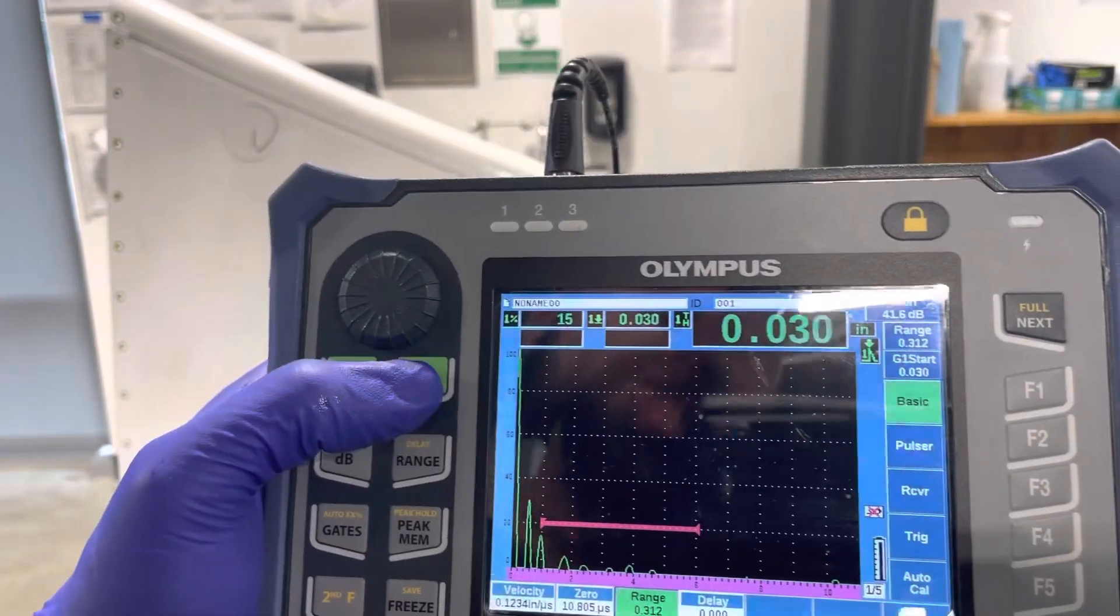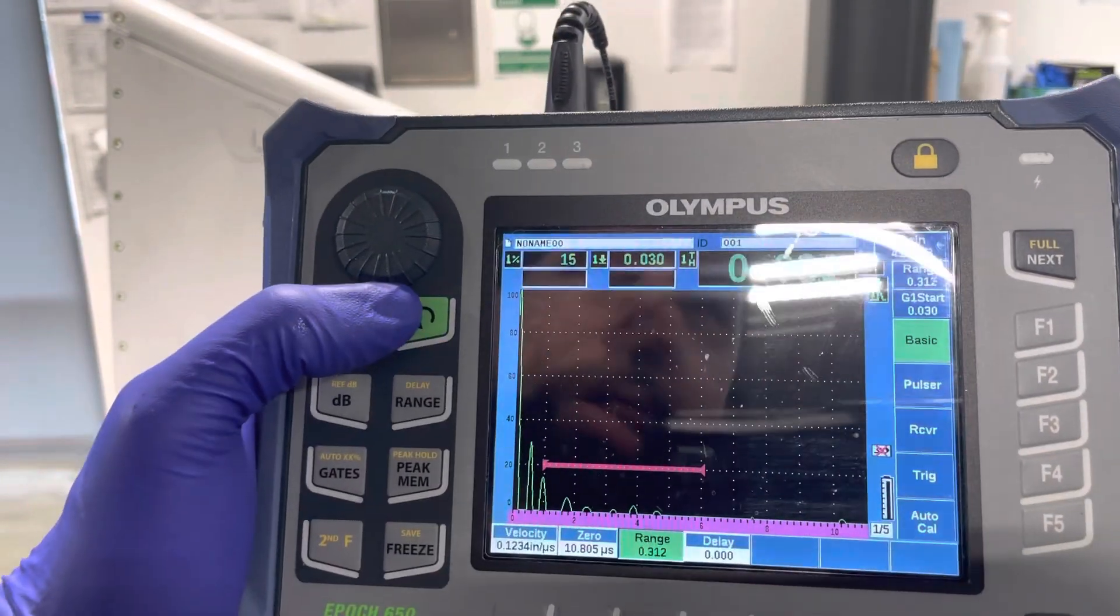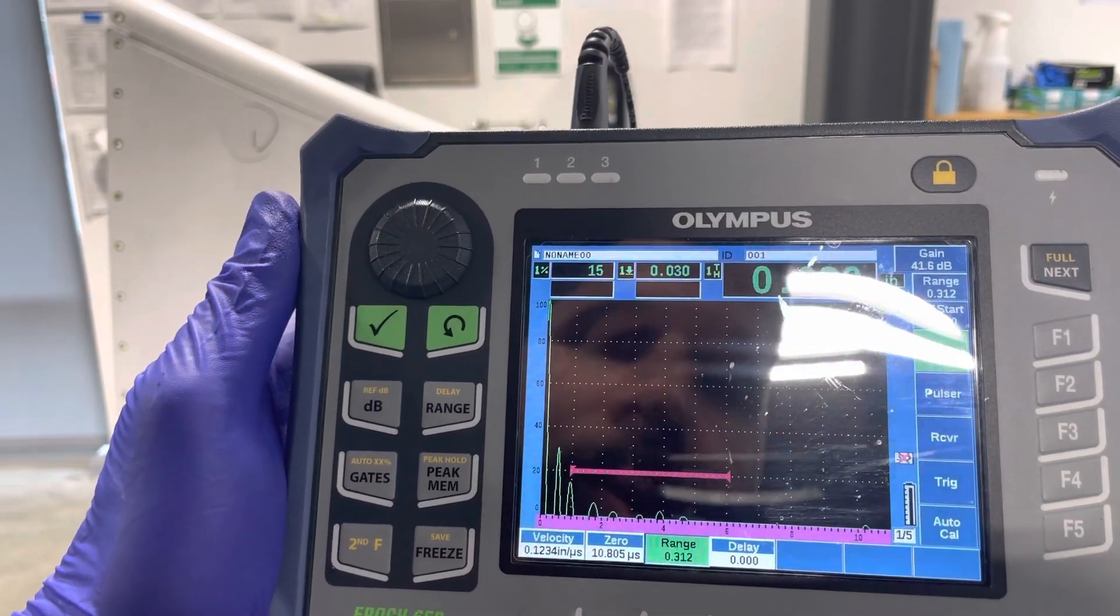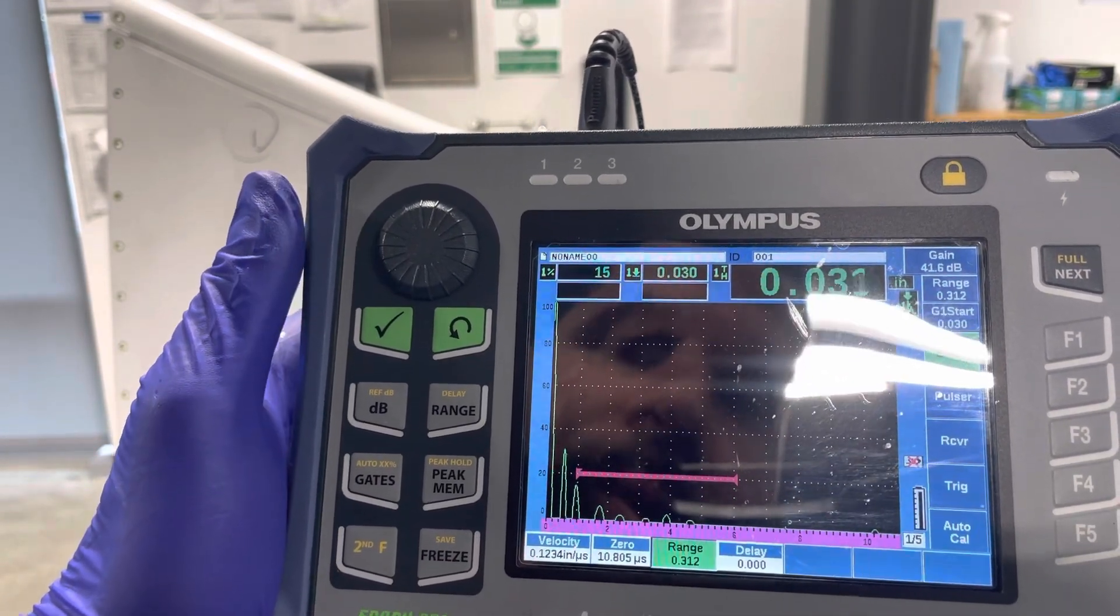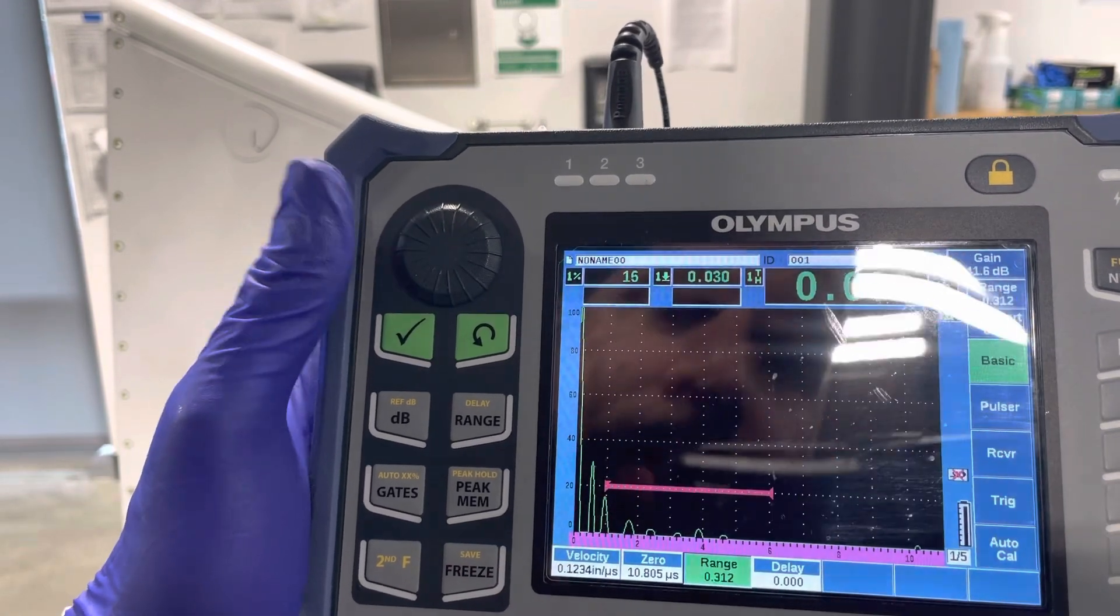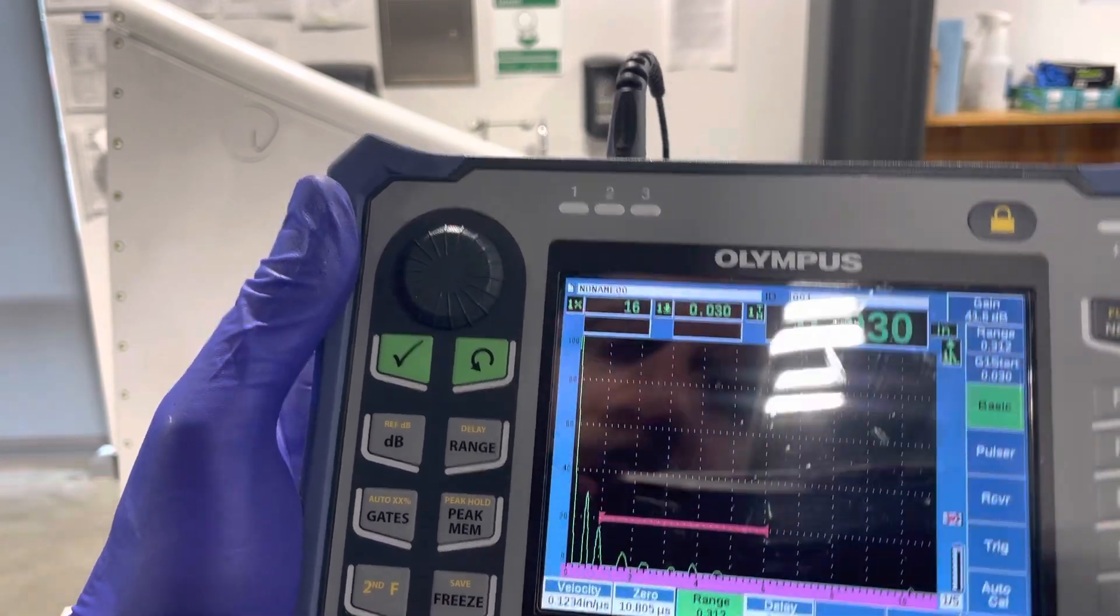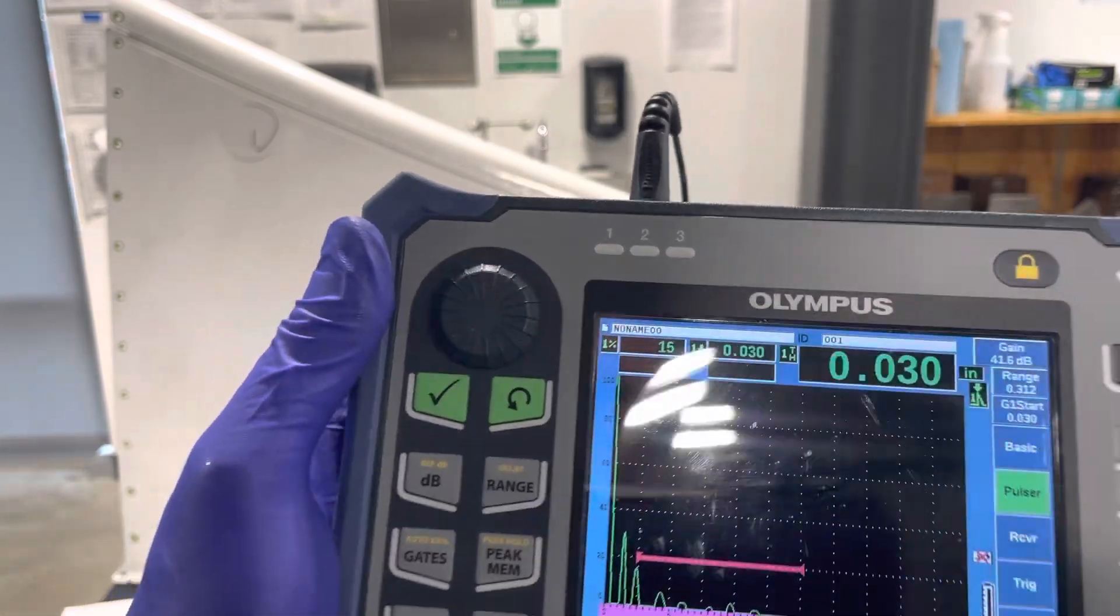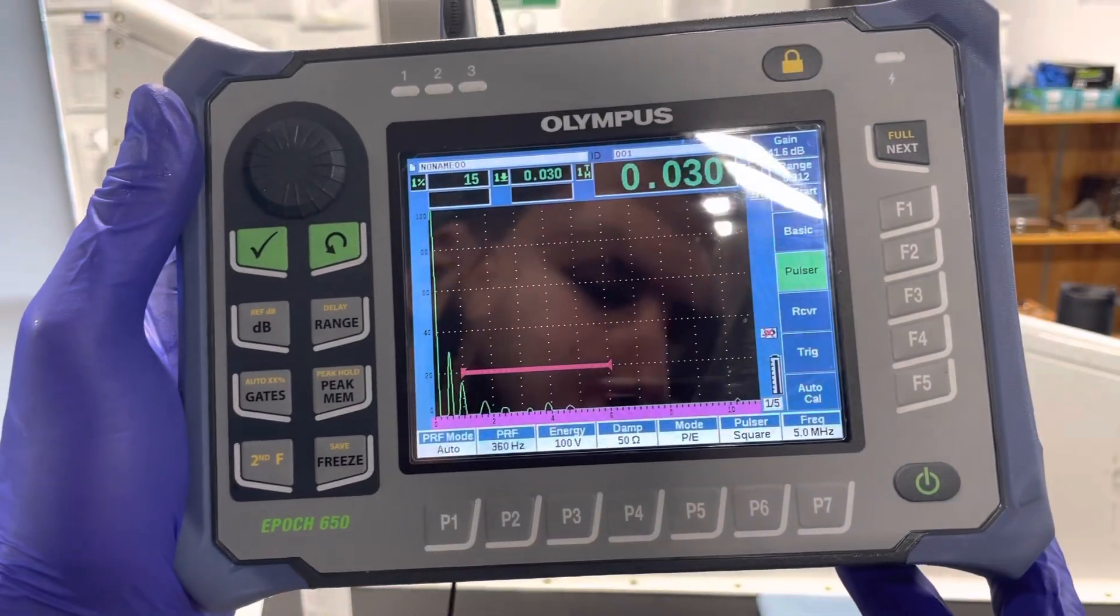That was some of my settings here, so we have a velocity of 1.1234, how about that, zeroes at 10.805, range of 3.12, no delay, repulsor on auto.